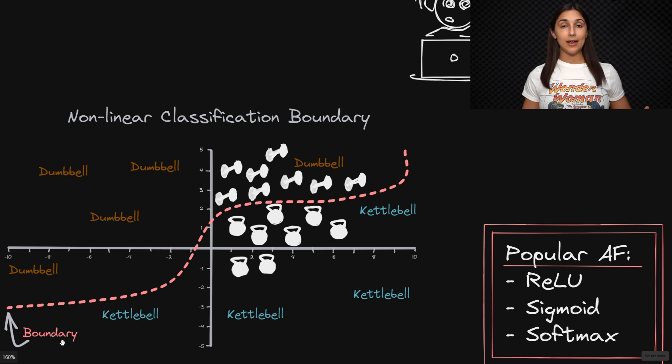When we have a network used for image classification, for example, its job is to divide the output space between the classes for which it's trained on. So here we have exemplified a network that has been trained to classify images of dumbbells and kettlebells. And we can see that the network has learned this nonlinear boundary within the output space that separates these two classes from each other.